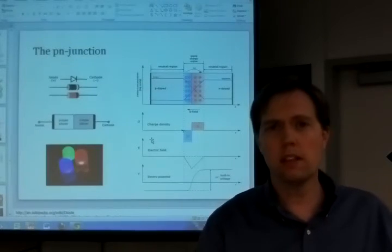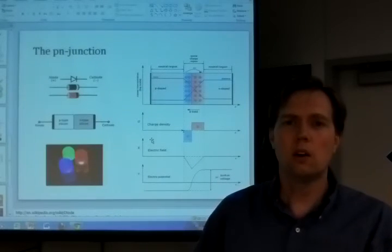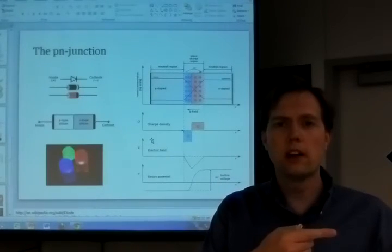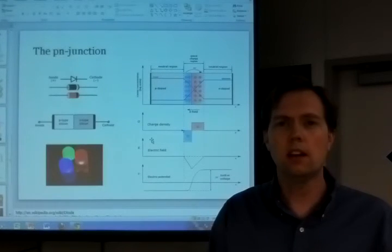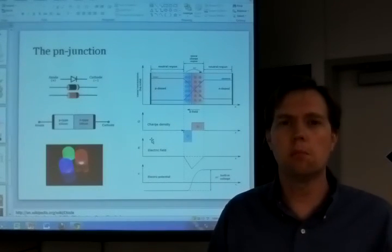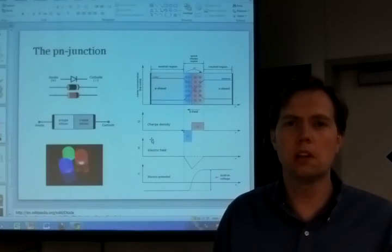So that's the great thing about the PN junction is that in one direction it allows the flow of current very easily. And in the other direction, it blocks the current. And in order to overcome that, you really have to put in a lot of voltage.